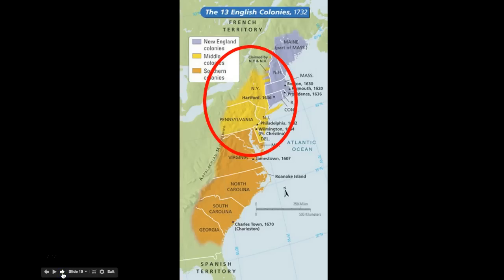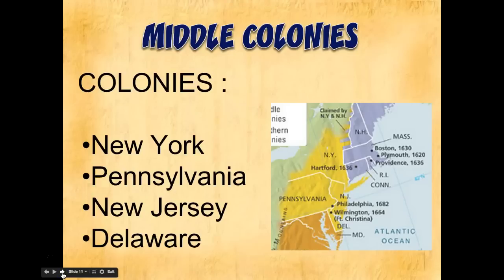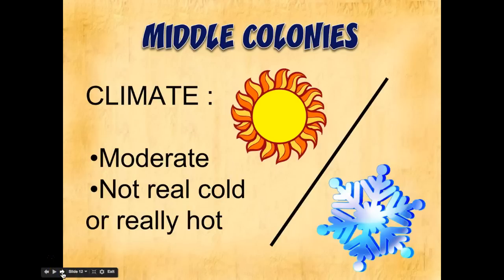Let's move south to the middle colonies. The middle colonies consist of New York, Pennsylvania, New Jersey, and Delaware. You can see them on the map. Some major cities develop there, including Philadelphia and eventually New York. The climate, being a little further south than New England, is going to be a little more moderate — meaning average. Not super cold, harsh winters, but also not the warm climate you'll see in Georgia. So a little more average overall.